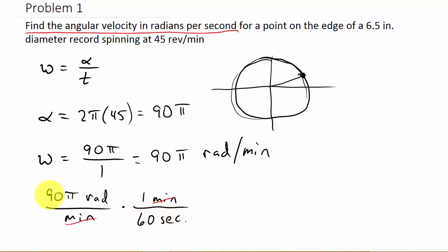And so what happens here is the minutes cancel, and so I'm left with 90 pi radians over 60 seconds. And if I do 90 pi divided by 60, that is going to give me 4.7. I'm going to round it to one decimal. So I did 90 pi divided by 60, and what is that? That is radians per second. And there's my solution.